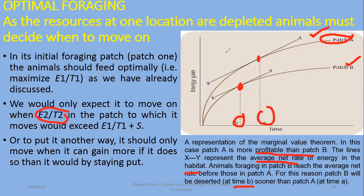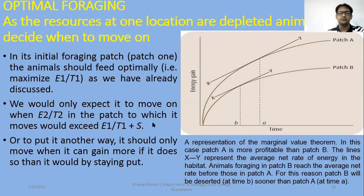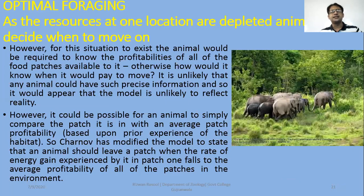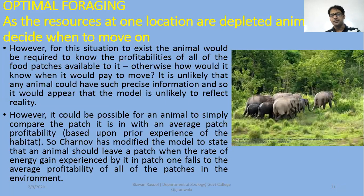We would only expect an animal to move on when E2 over T2 in the new patch exceeds energy E1 over T1 plus S — that is, if it gets more energy in the new patch than in the first patch plus the travel time cost. Like migrating elephants that migrate toward water or grasslands. However, for this situation to exist the animal would need to know the profitabilities of all food patches available to it, which is unlikely for any animal.